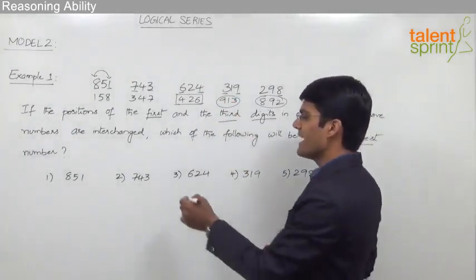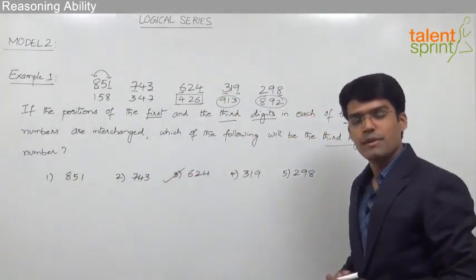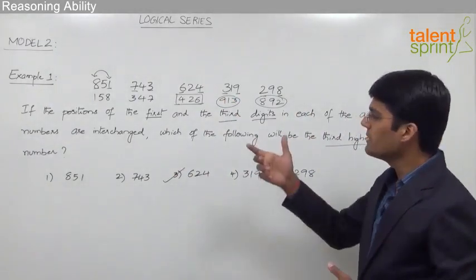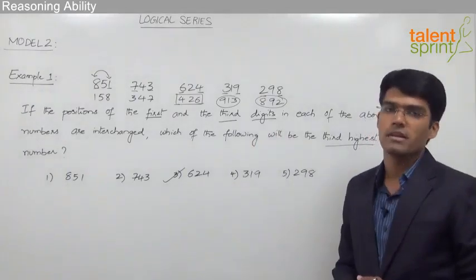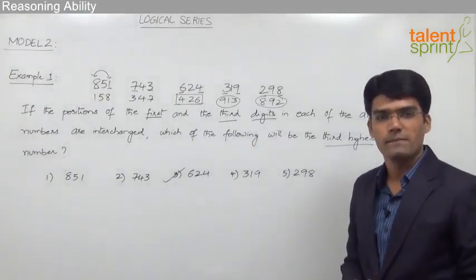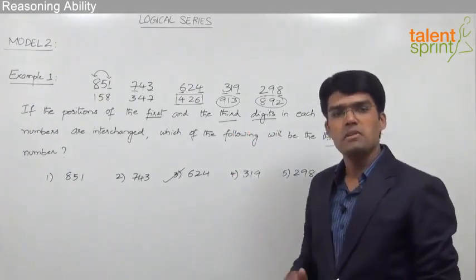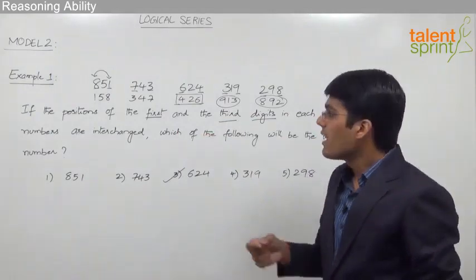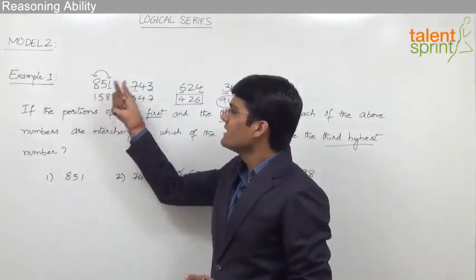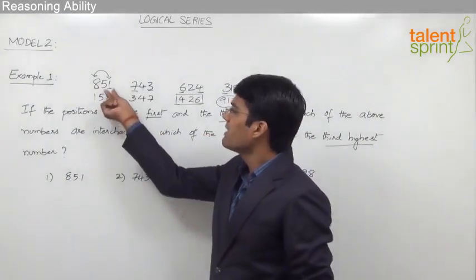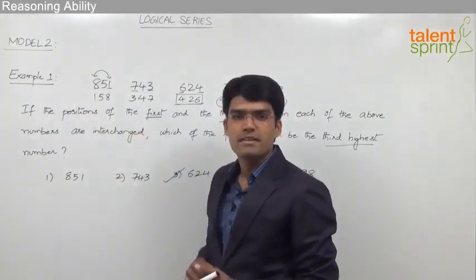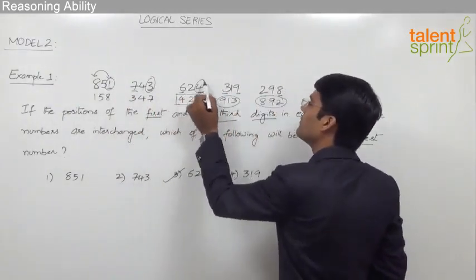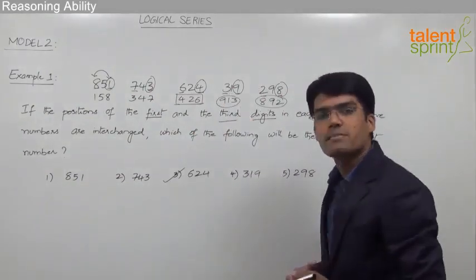From the given options we can say that the correct answer is option 3, which is 624. This is a self-explanatory question where we simply need to understand what is given and solve it quickly. But the solution can be made even simpler without writing any of those new numbers. The simple logic is: once we interchange the first and the third digits, the third digit becomes the first digit — meaning whatever is in the units place in the given numbers, 1, 3, 4, 9 and 8, they will move to the hundreds place.